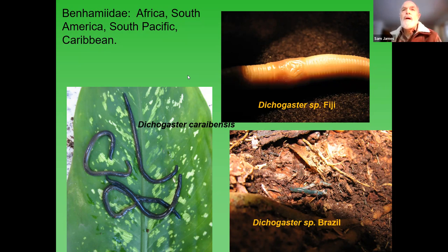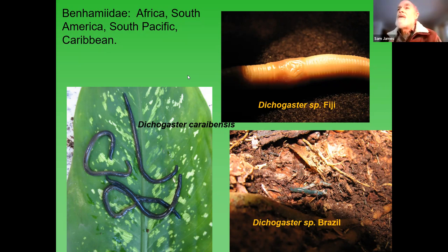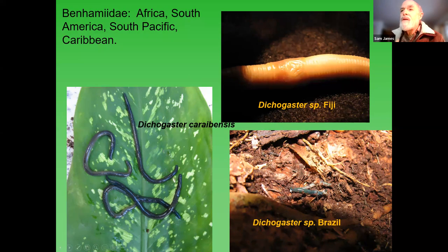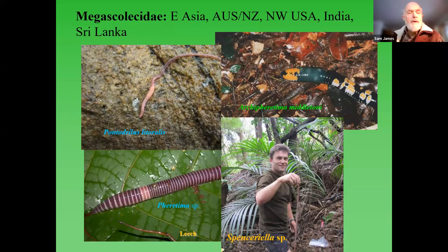One I came up with: Dicogaster caribensis is a bromeliad dweller from the island of Guadeloupe. Top right is a Dicogaster with a nice little design on its male genital field - this is from Fiji out in the Pacific, a real biogeographical puzzle. Then there's one or two that have turned up in Brazil - this little greenish one I found in the decaying remains of the base of a bromeliad up in a tree. All of these are closely related to the Megascolecidae, which is the source of some worms you'll be hearing about later, as they have invaded North America.